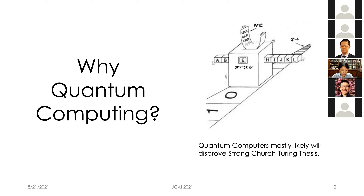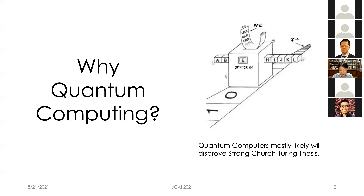A famous strong Church-Turing hypothesis claims that every realistic computing model could always be efficiently simulated by the Turing machine. However, it is now widely believed that quantum computers would disprove this hypothesis, and this really excites the whole research community.